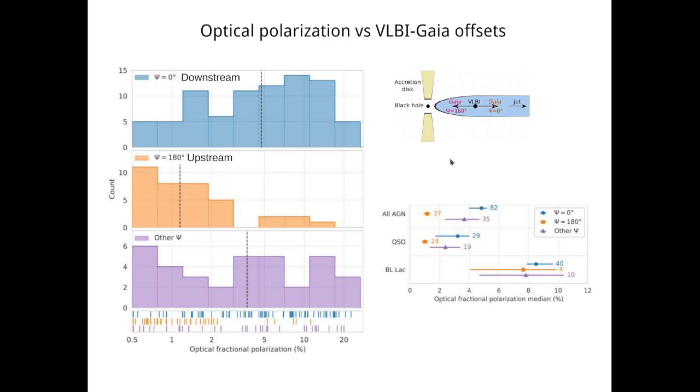So this is the main finding of this work. Using a totally independent dataset and observable, we confirm the hypothesis that the VLBI-Gaia offsets are caused by different substructures of AGN dominating in the total flux. In one case it's the dominating extended jet in the optical, and in the other case it's a central engine dominating in the total flux. In this plot on the bottom right we find the median fractional polarization for each of these three samples and plot it together with the uncertainties. We also separate two subclasses of AGN, flat spectrum radio quasars and BL Lac sources. Our finding stands also for FSRQs separately.